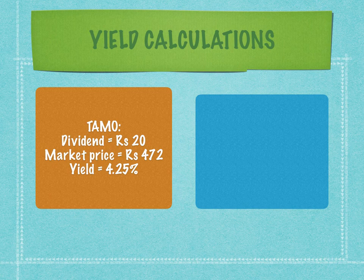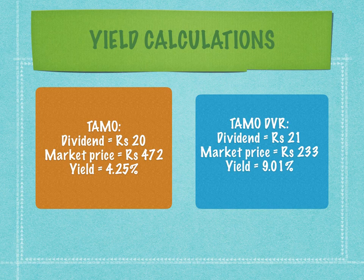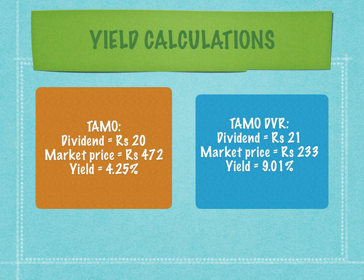Tata Motors common stock dividend is 20 rupees, and the market price is 472 rupees. The yield calculated is 20 divided by 472, giving a yield of 4.25 percent. Now for the DVR: the dividend is 21 rupees and the market price is 233 rupees. Even though the dividend is only one rupee more in the case of DVR, the market price is almost half. Therefore the yield is almost double — in fact more than double — working out to 9.01 percent.